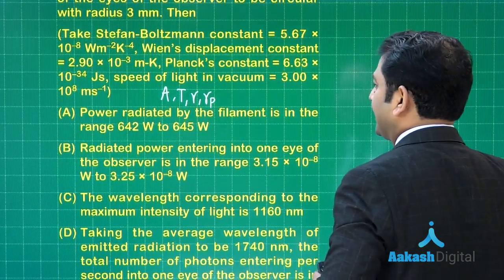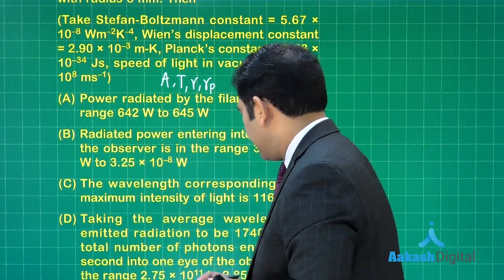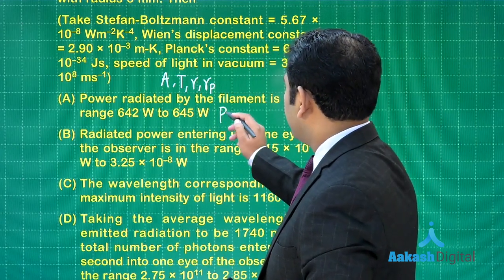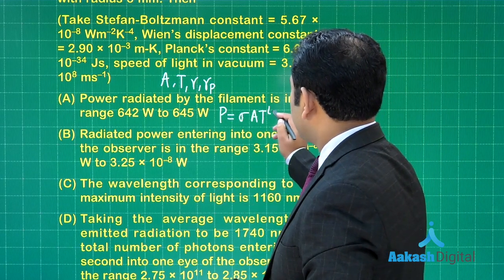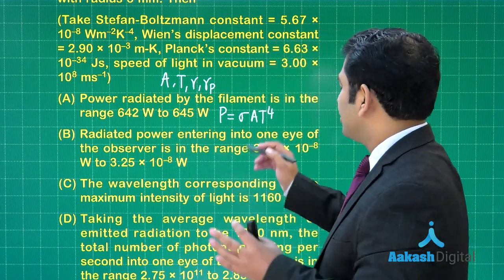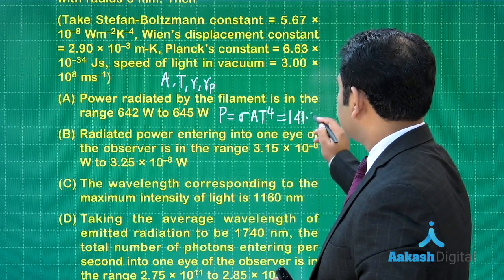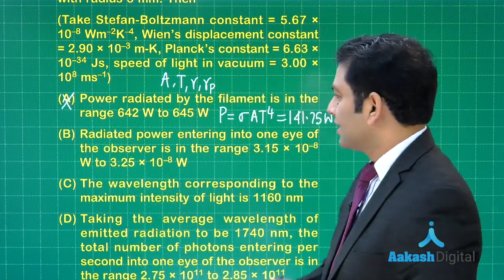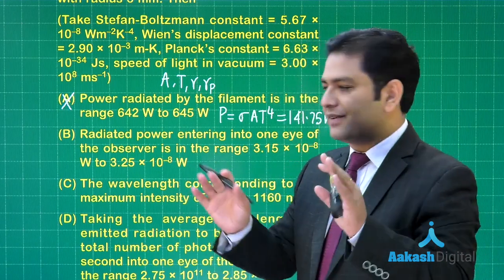First thing that we require is the power radiated by the filament. The expression of power radiated by a black body is σAT raised to the power 4, because the emissivity will be taken as 1. When you do this, the option will come 141.75 watt. You could see option number A does not match. As I have already given the disclaimer, a little amount of calculation is involved but it is not very hectic.